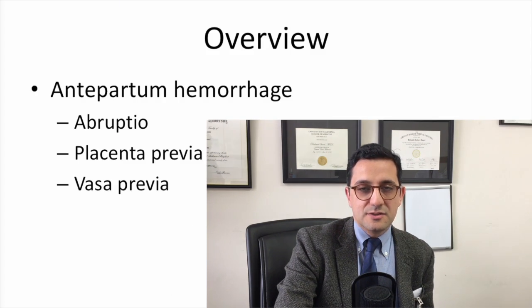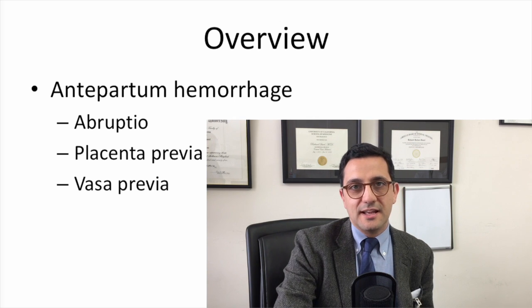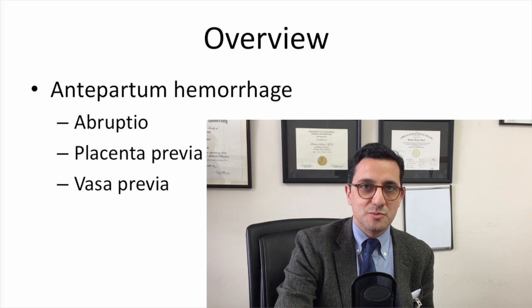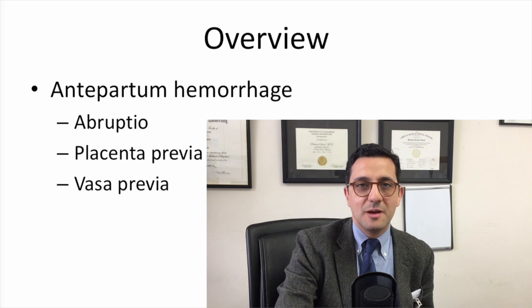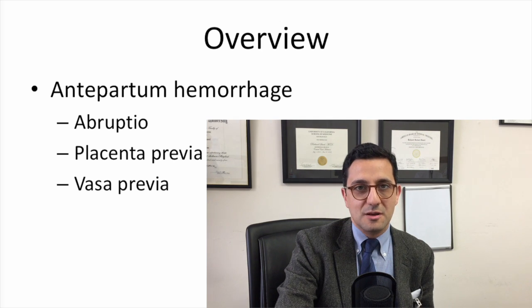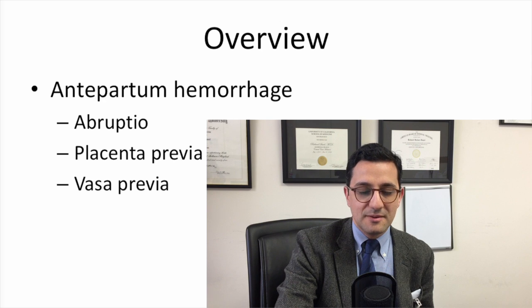Obstetrical hemorrhage is classically divided between antepartum hemorrhage and postpartum hemorrhage. The three common causes of antepartum hemorrhage are placental abruption (or abruptio placenta), placenta previa, and vasa previa.